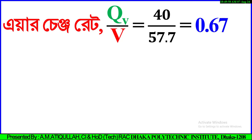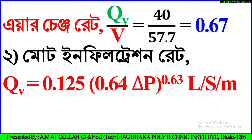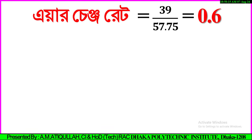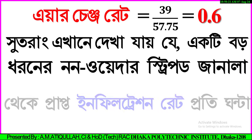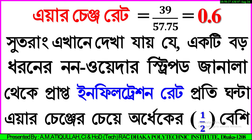Air change rate haabe sotra holo qb by b. Ekane qb yagun b-er maan basiri amra payi 0.67. Mot infiltration rate haabe qb soman 0.125 - proyejo ne mangula hamra gosiye pai 0.6. Eki boro dharane non-weather sti pot janala akhe teke paapta - infiltration rate oti ghantha air change 0.5 air change rate-er besi, which is 0.6 air changes per hour.